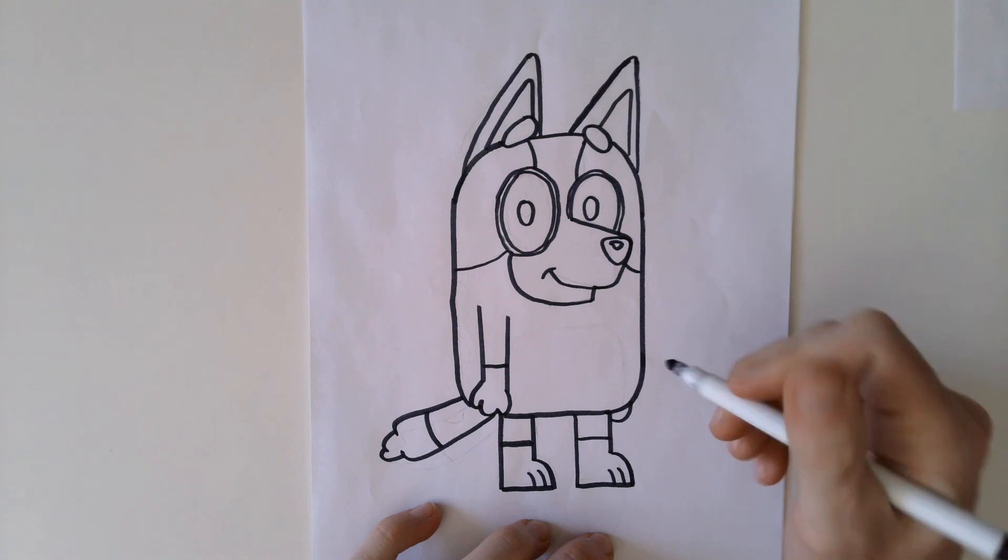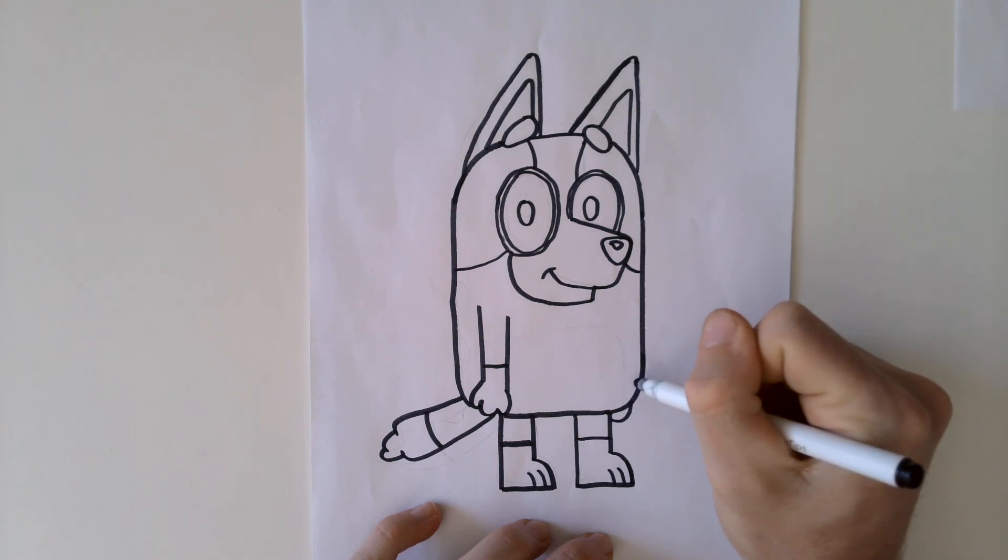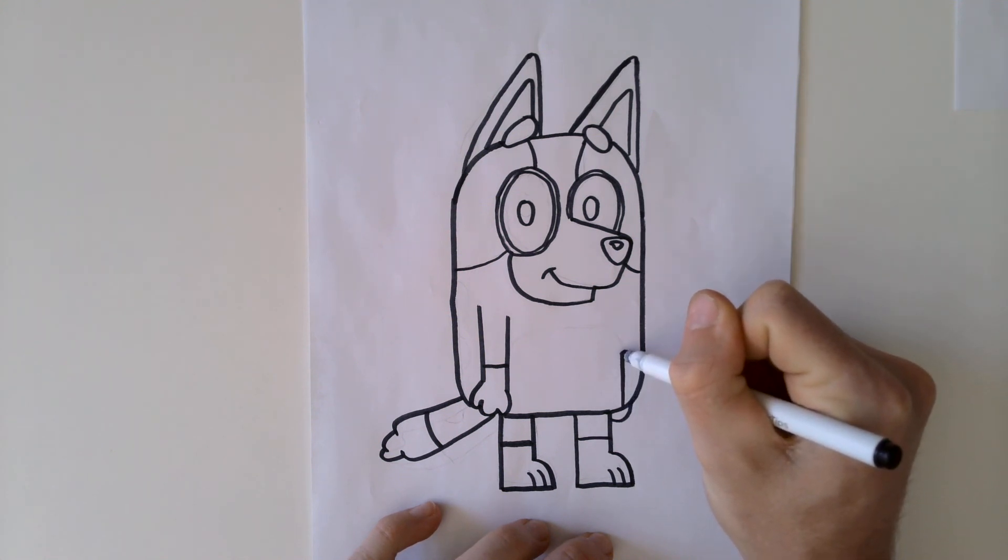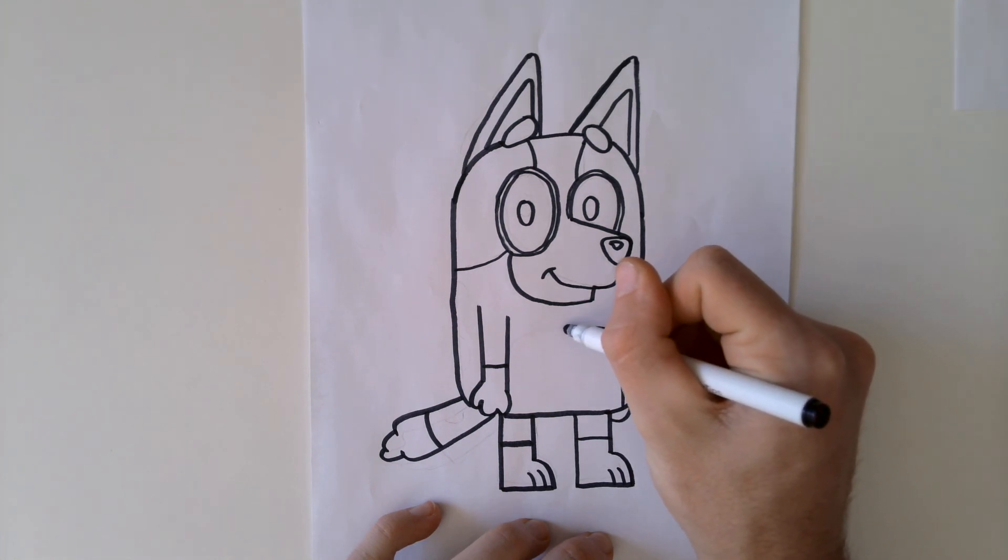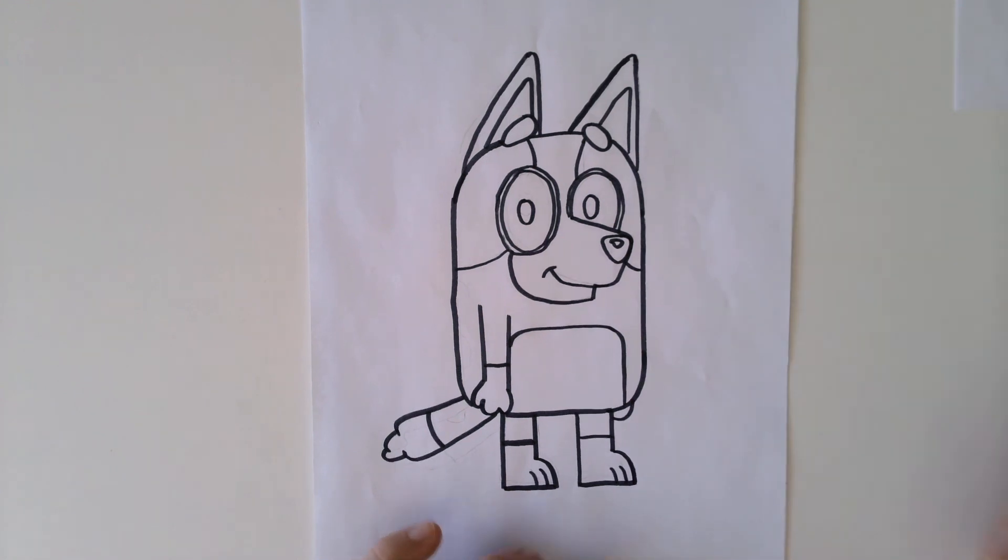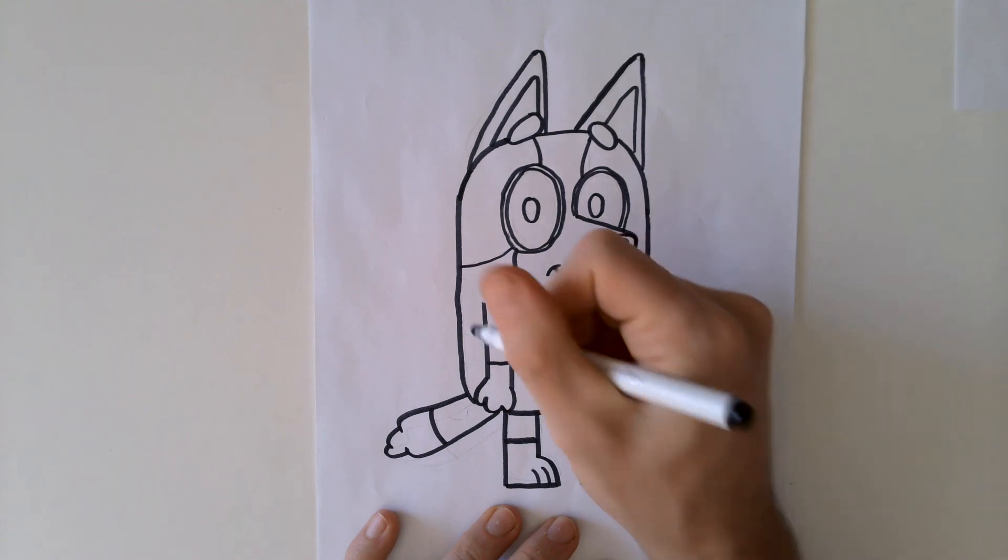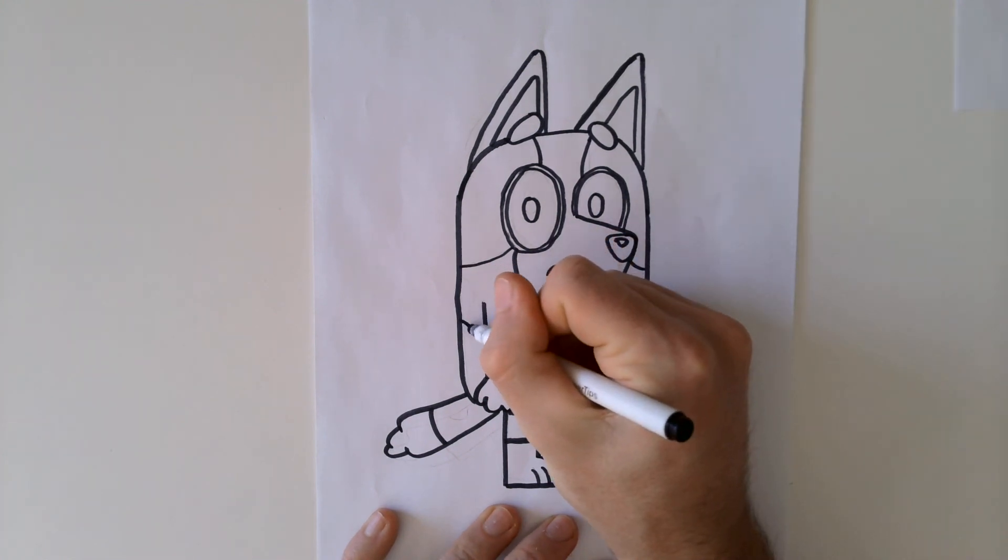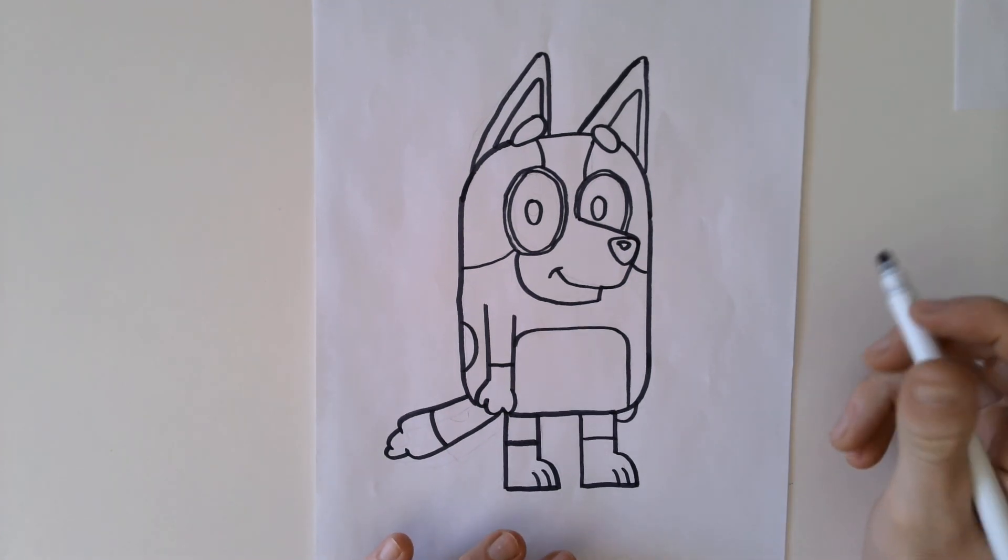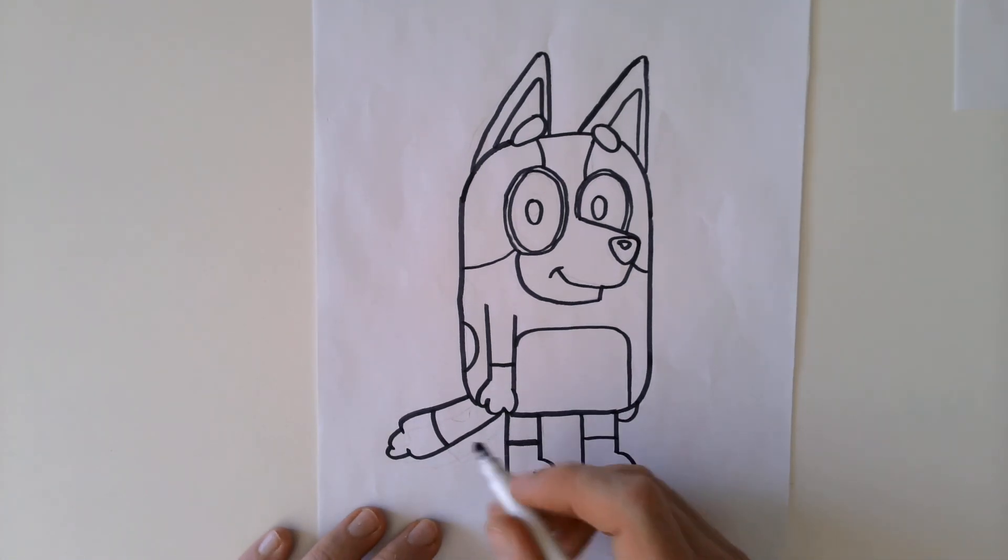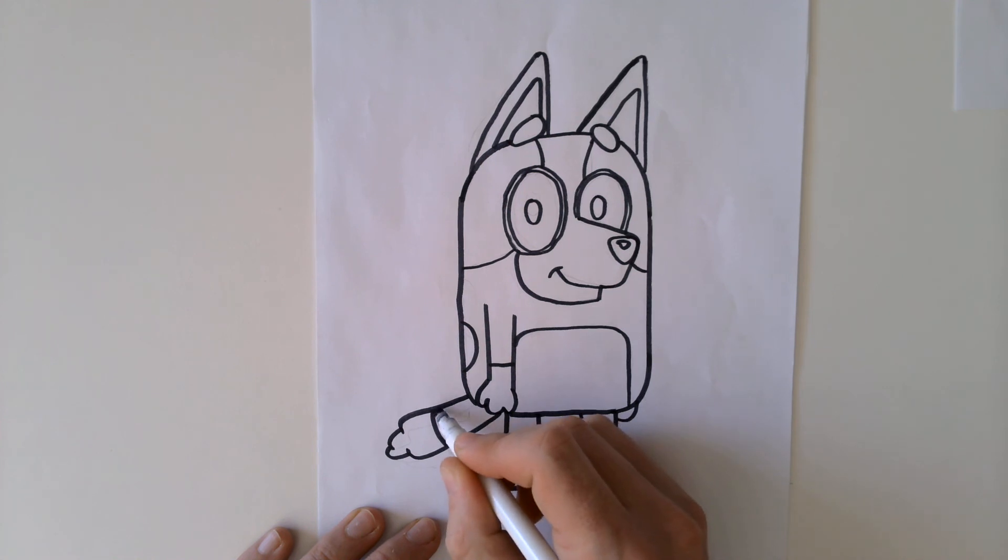Bingo's got a belly patch here. So we might start from this side, actually. We'll go a little bit in. Up. Across. And down. We've got a few spots here on the back. So we've got one. And we've got a little spot on the tail here. So we're going to do another spot like that.